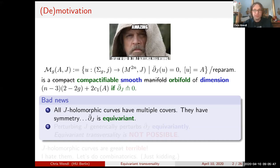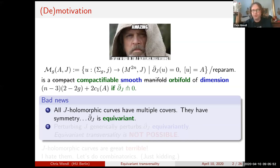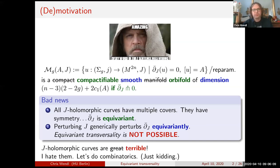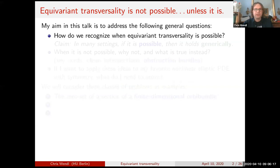Now you have a real problem: you'd like to perturb your auxiliary choice of almost complex structure, but no matter how you do that the d-bar operator is still equivariant. So you're always making equivariant perturbations, and equivariant transversality is in general not possible. At which point you might say: actually J-holomorphic curves are terrible, I hate them, let's do combinatorics instead. But I want to give some good news. I'm not going to claim that equivariant transversality problems can always be solved — sometimes they definitely can't — but sometimes they can, and it's possible to recognize when.